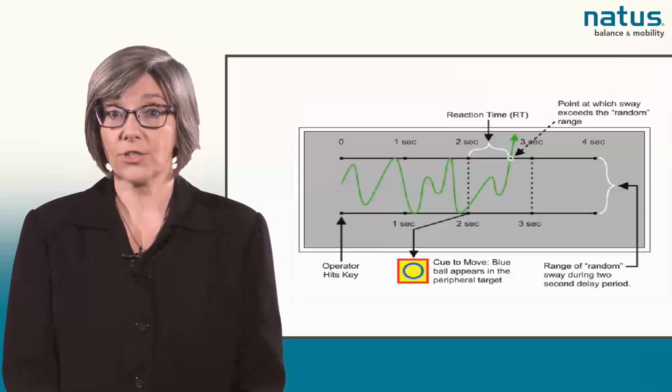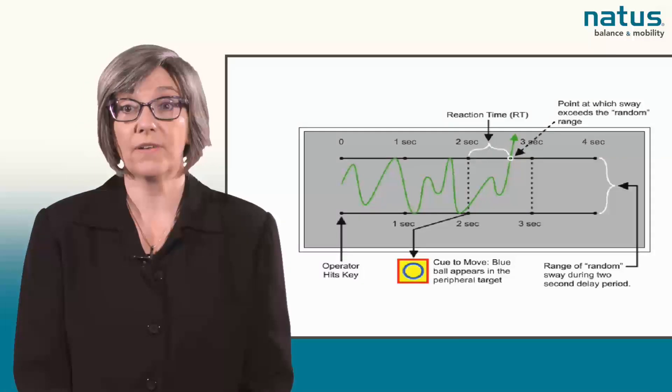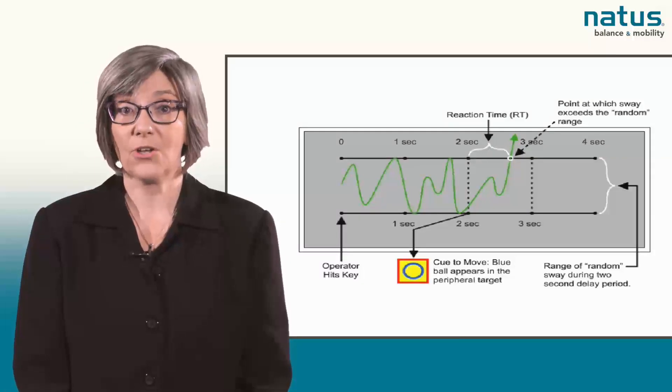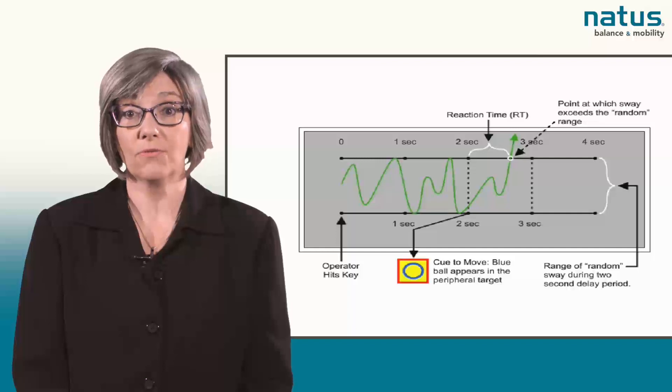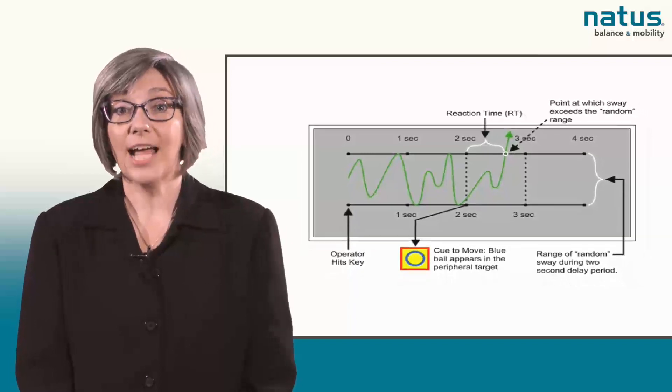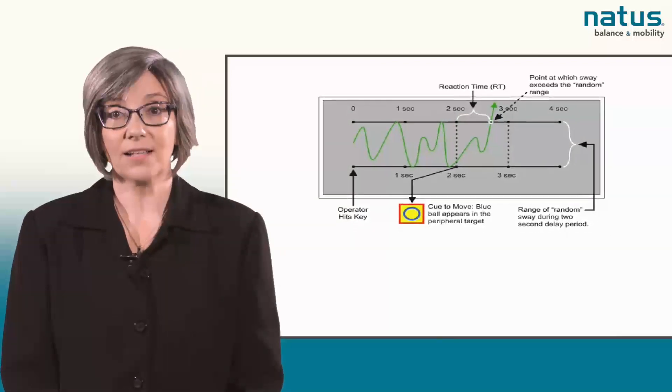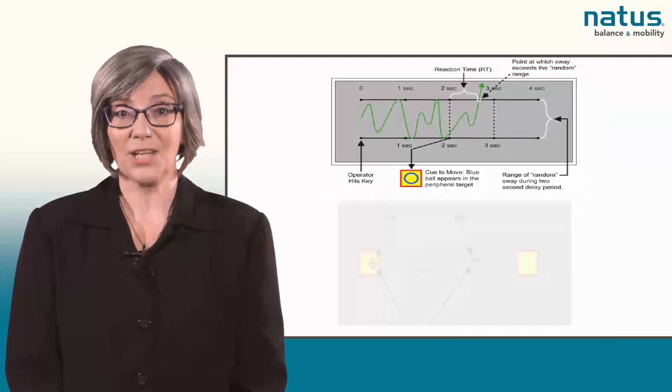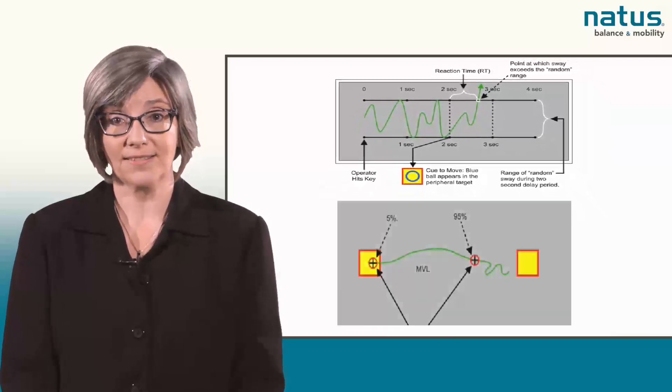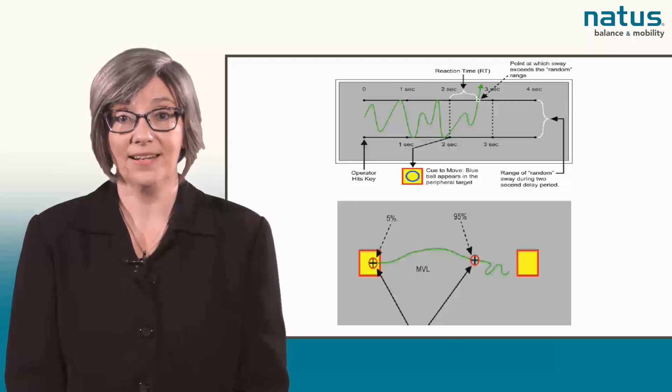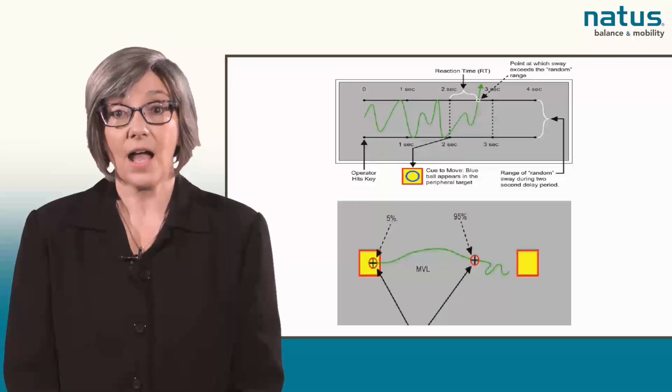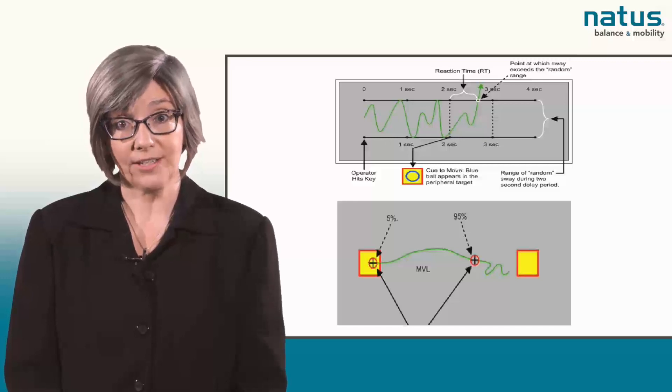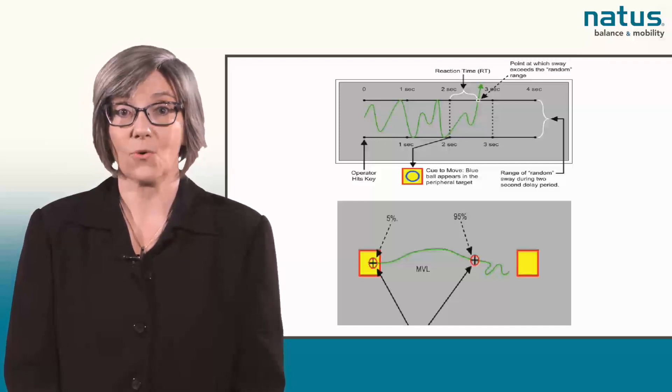You may recall the instructions to the patient are to move as quickly as possible toward each Limits of Stability target when the cue to move appears. The reaction time and movement velocity scores provide quantification of movement timing components of self-initiated movement and anticipatory postural control. High velocity scores are good. Lower velocity scores are worse.